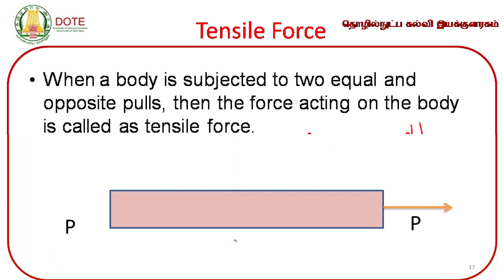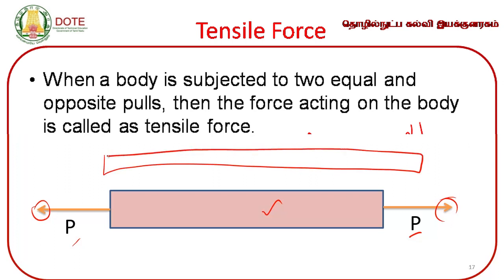Tensile force: when a body is subjected to two equal and opposite pulls — equal in magnitude but acting in opposite direction — the object is subjected to tensile force. The result is elongation: length will be increased, while the diameter will be decreased because of the tensile force.